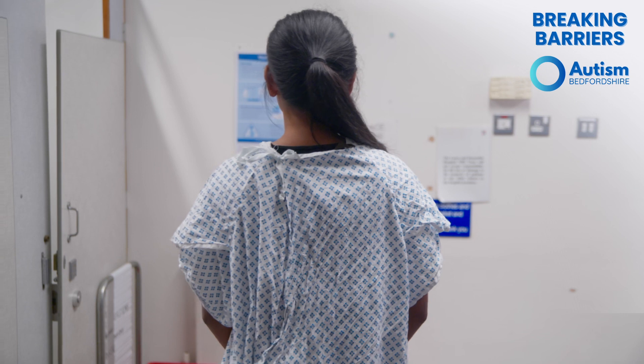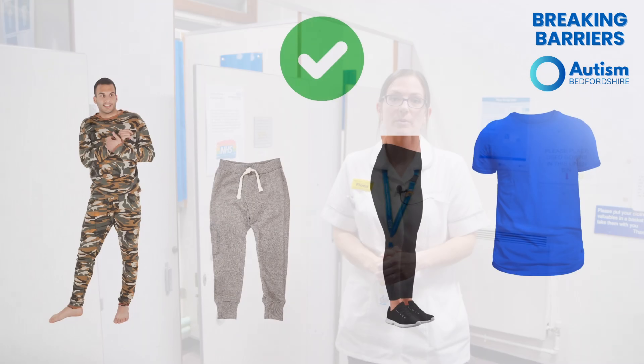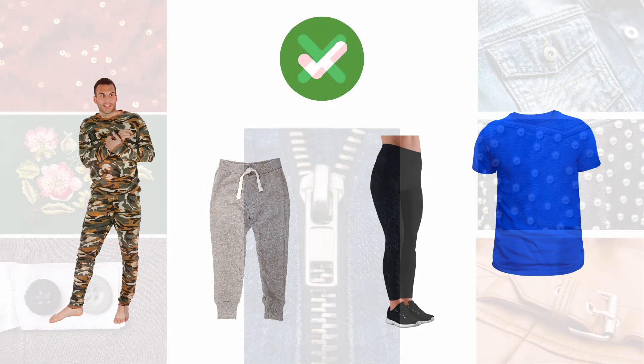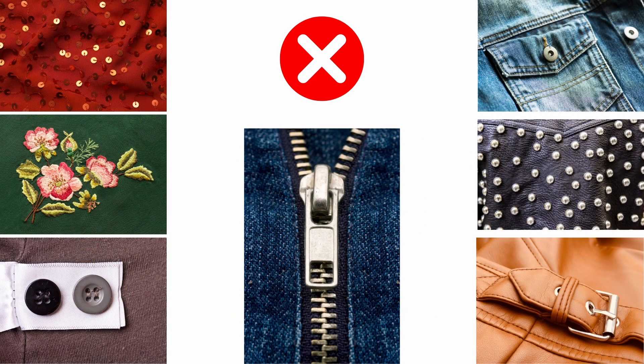If you are sensitive to clothing, wearing a pair of your pyjamas or a plain t-shirt and trousers with no buttons, zips, poppers or other fastenings, and no embroidery, sequins or metal, is normally a good way to avoid needing to get changed.